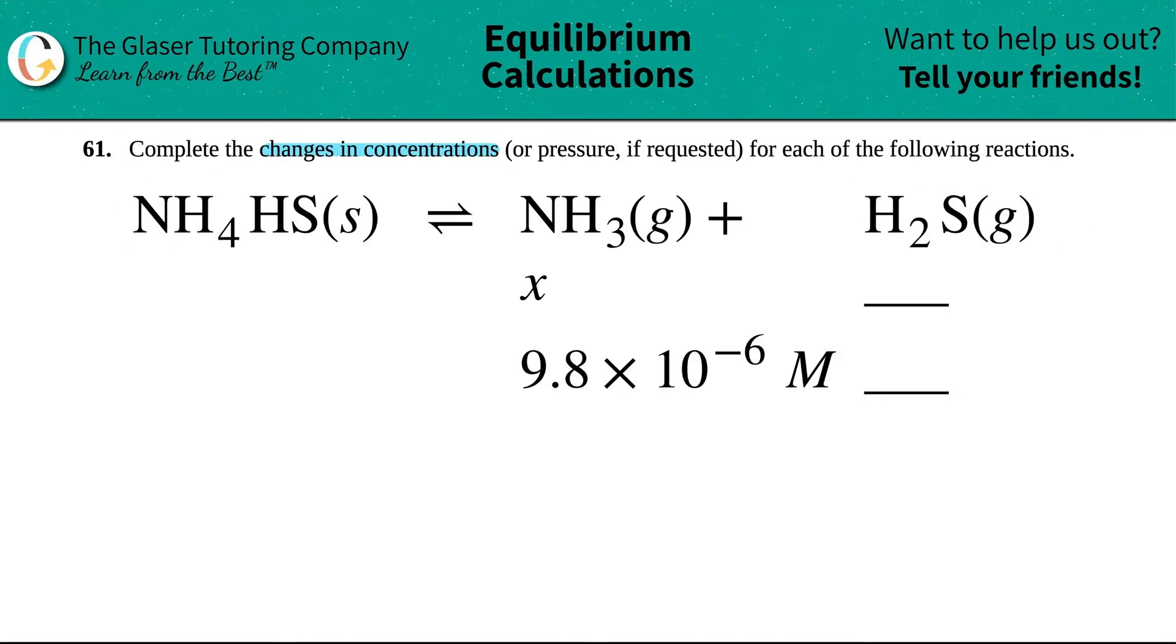So in this case, we have to figure out the changes in the concentration of NH4HS solid, which comes to equilibrium with NH3 gas plus H2S gas. Now we always have to start with what we're given, right?